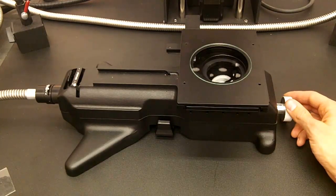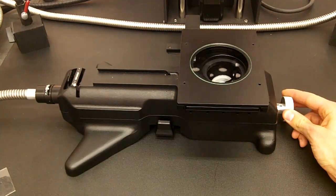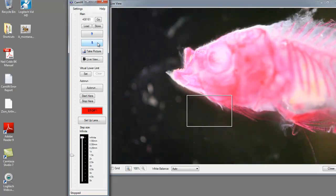Now turning this knob adjusts the position of the backlight behind the specimen. This can be used to create interesting effects depending on the type of picture that you're looking for.